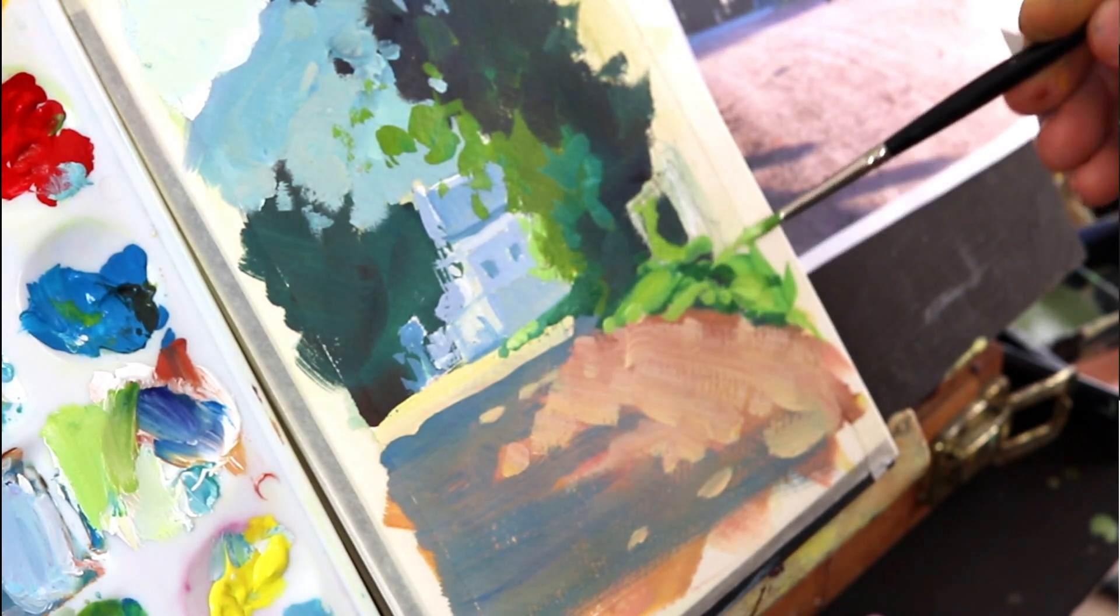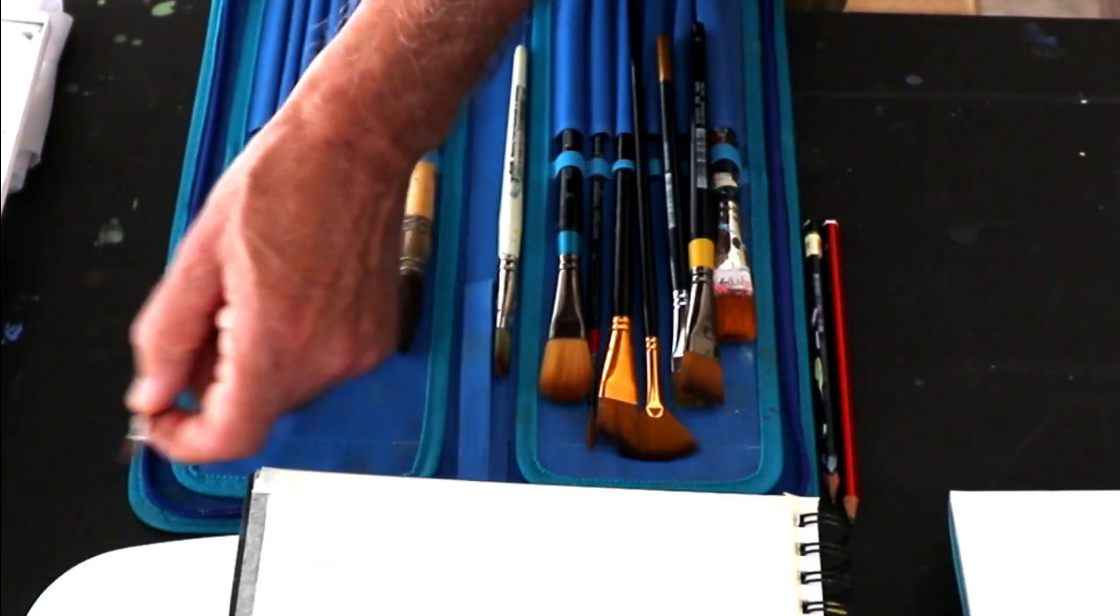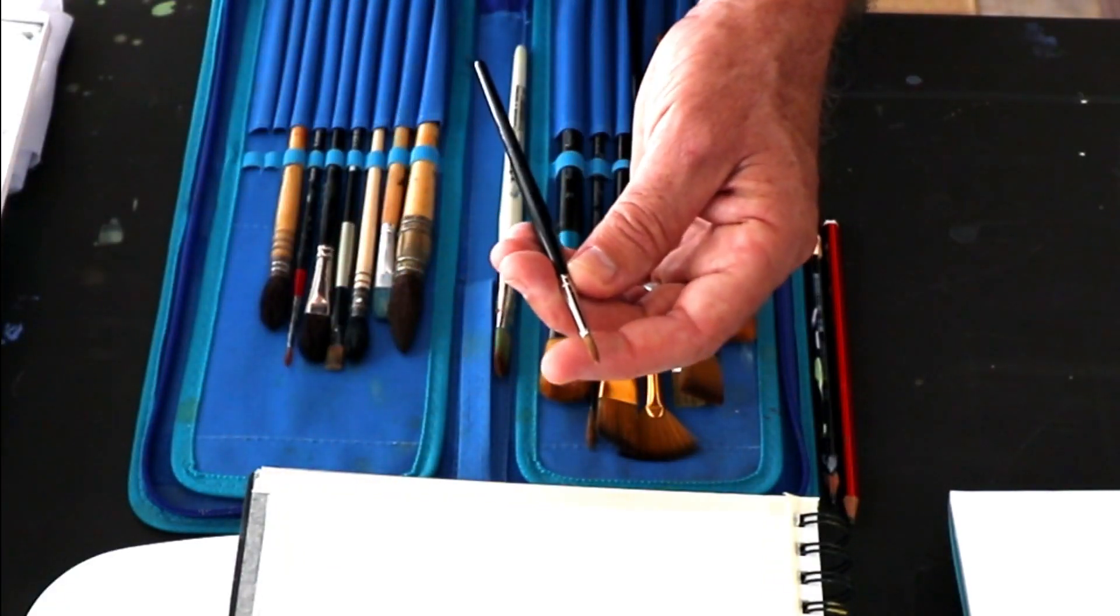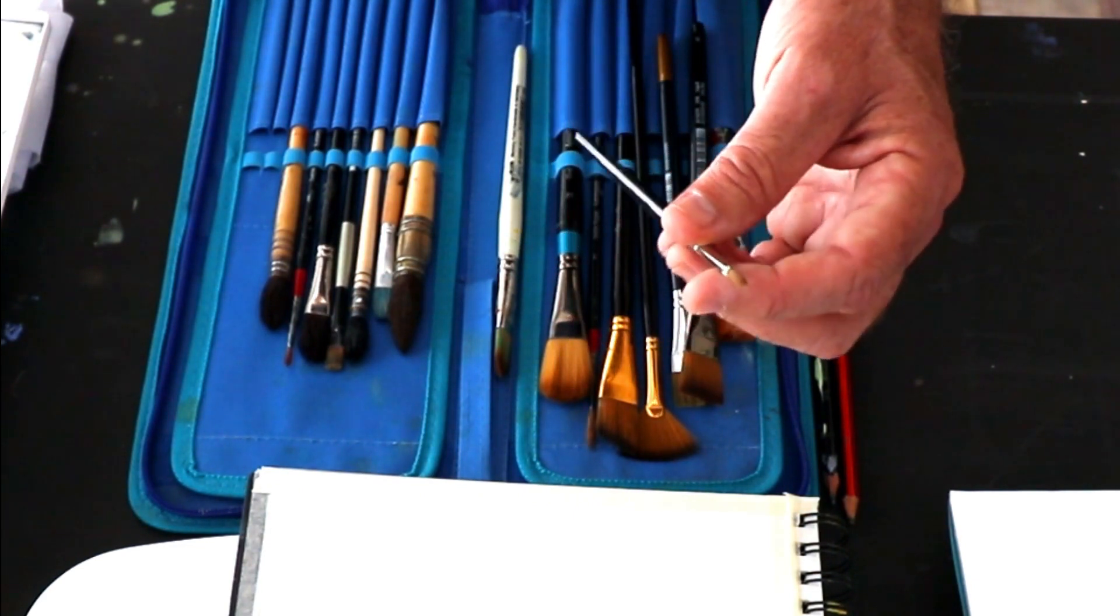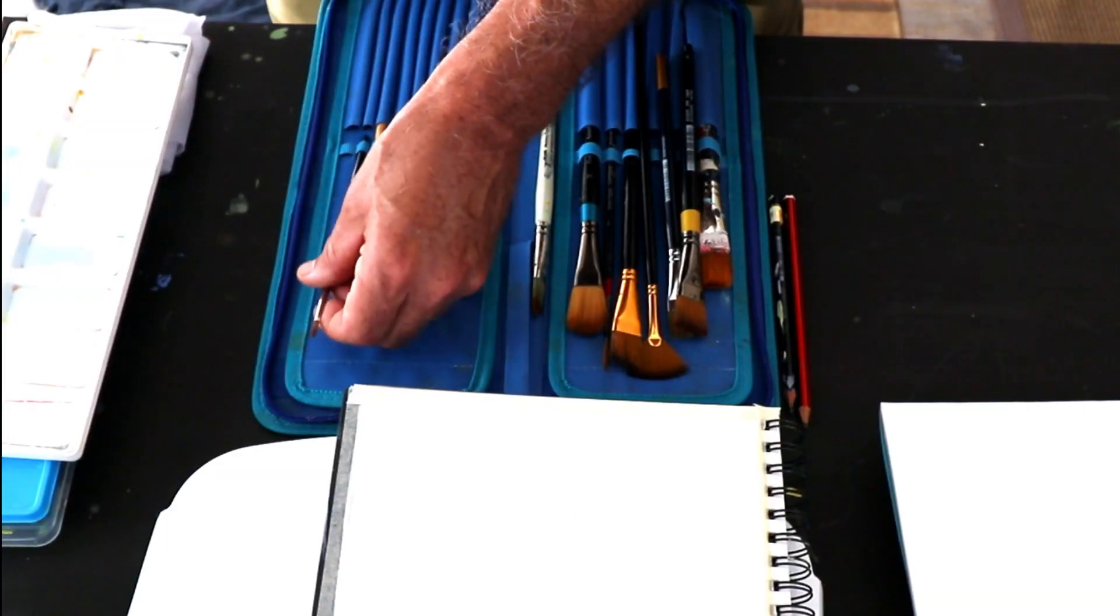And if you can get your hands on a sable brush or two, then a basic round like this. This is a number three. If you can get a bigger one as well, that would be perfect.